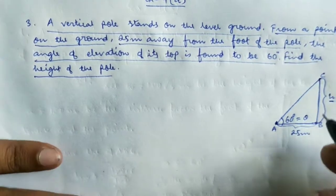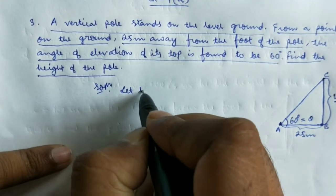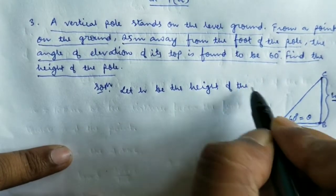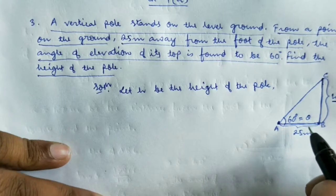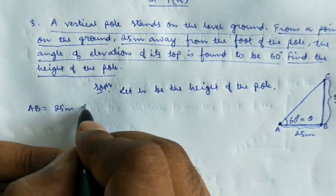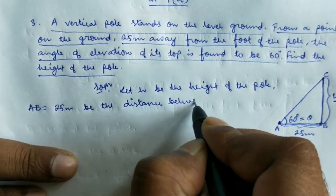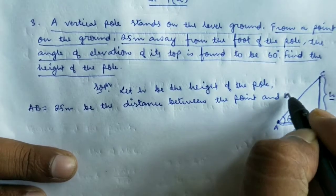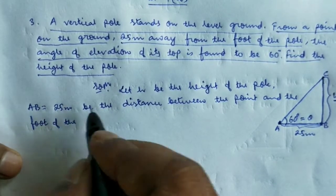Let H be the height of the pole. AB equals 25 meters is the distance between point A and the foot of the pole. The angle theta is also mentioned here, and theta equals 60 degrees, which is the angle of elevation.